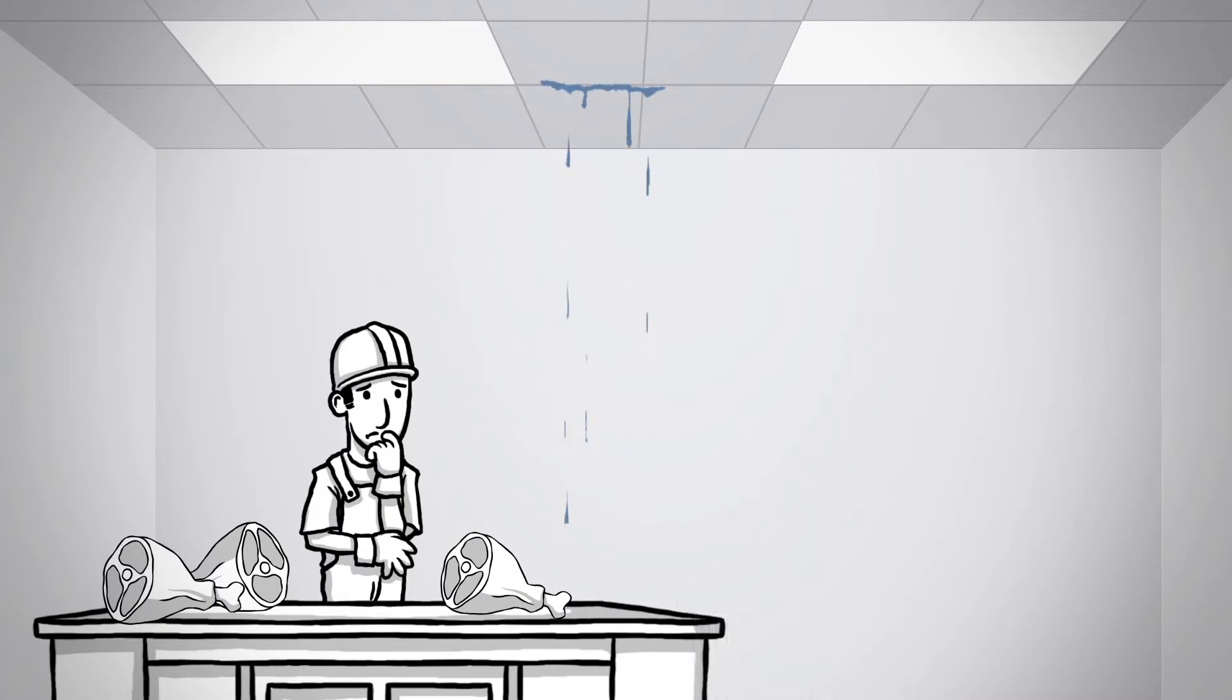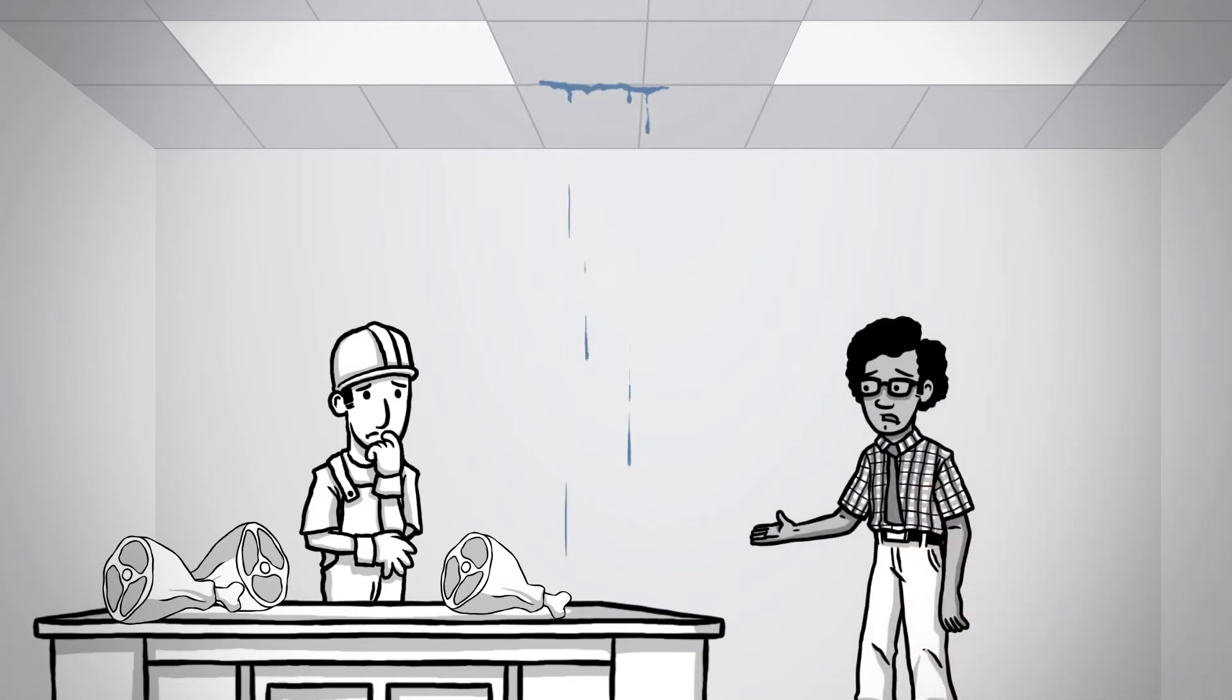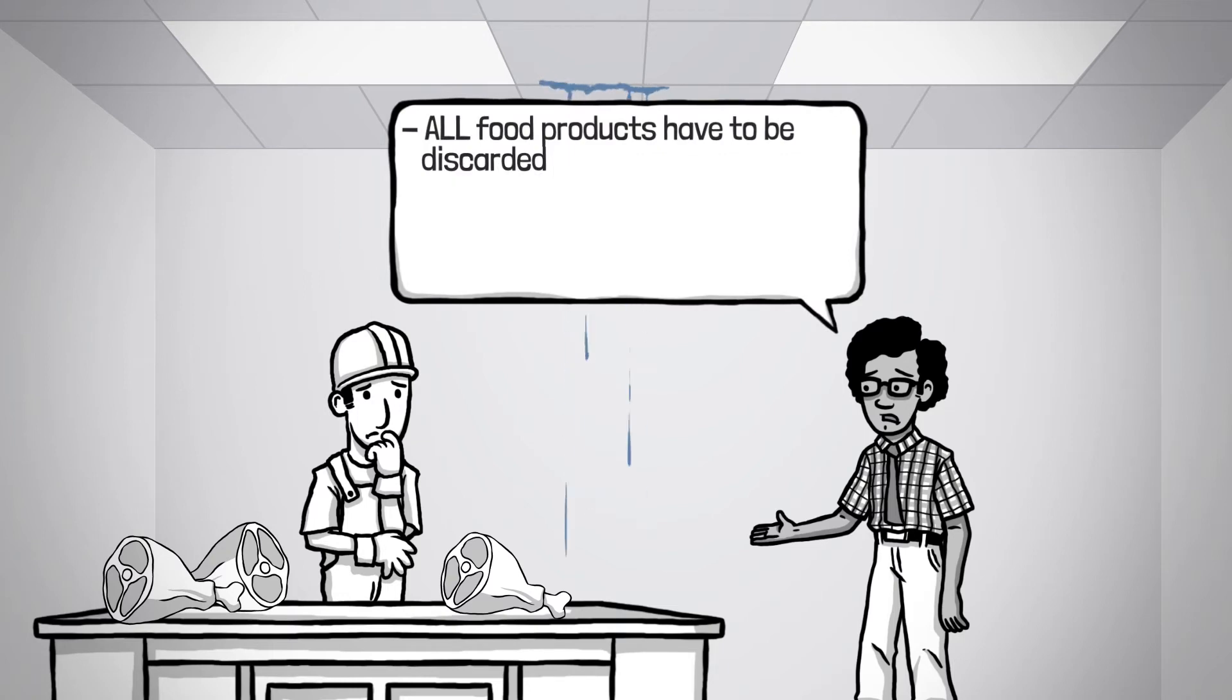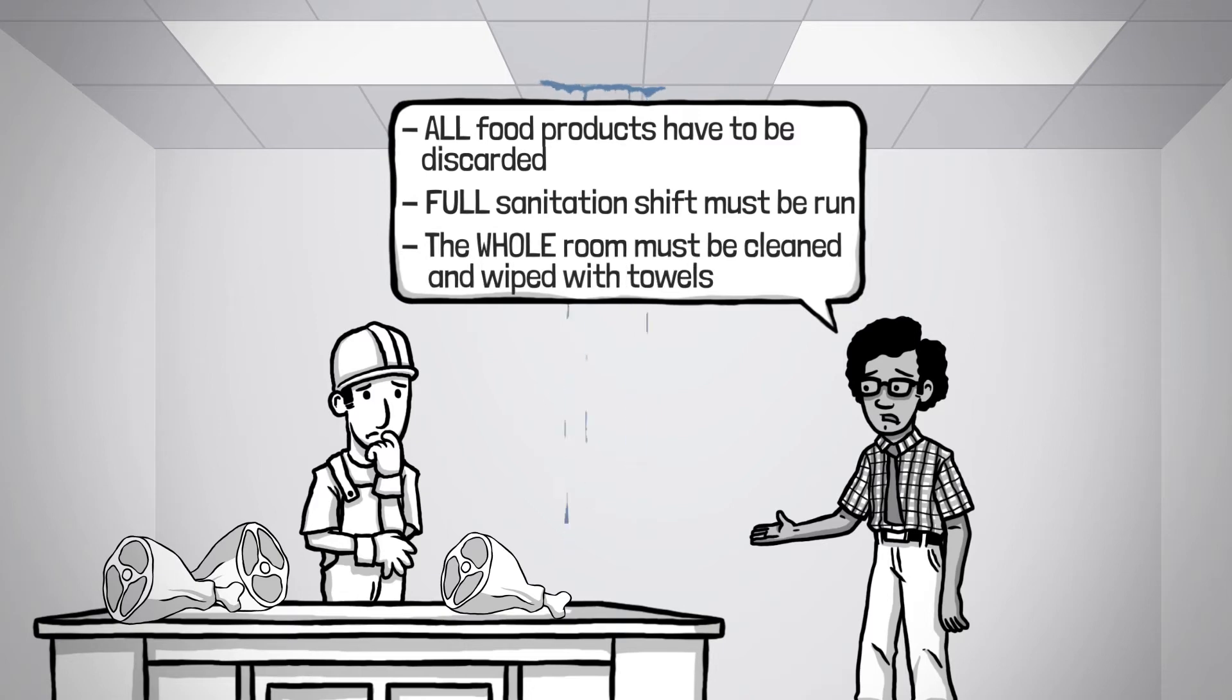And what's worse, if an inspector visits the processing room and sees this water build up and dripping, then all food products have to be discarded, then a full sanitation shift must be run, and then the whole room must be cleaned and wiped with towels.